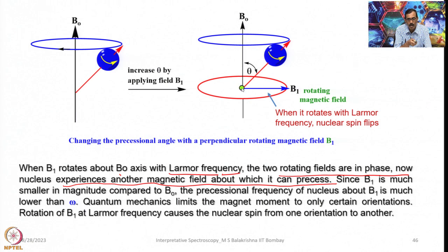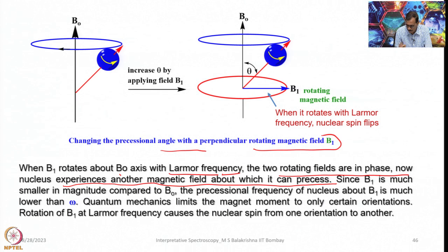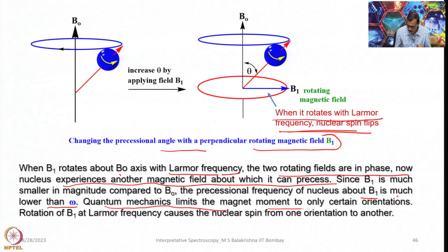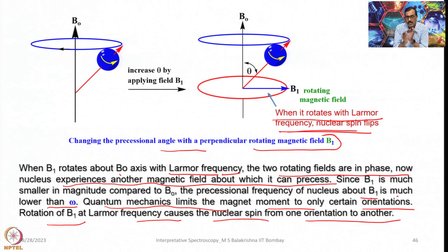When B₁ rotates about B₀ with the Larmor frequency, a nuclear transition occurs — the spin flips, changing the precessional angle. The precessional frequency of the nucleus about B₁ is much lower than ω. Quantum mechanics limits the magnetic moment to only certain orientations; rotation of B₁ at the Larmor frequency causes the nuclear spin to transition from one orientation to another. Knowing the precessional frequency of a nucleus under B₀, we apply a perpendicular magnetic field B₁ with a frequency matching the Larmor frequency of that nucleus to cause the nuclear spin flip.